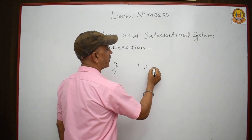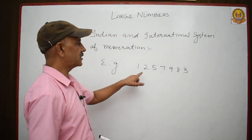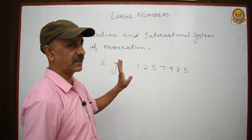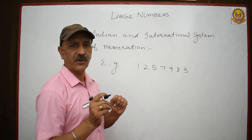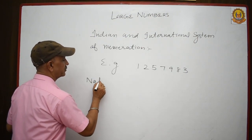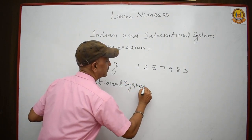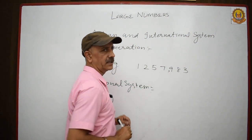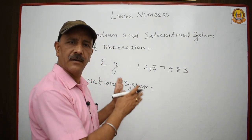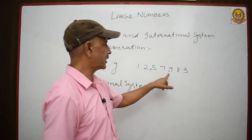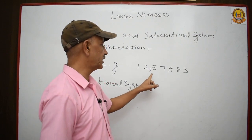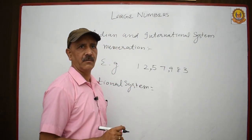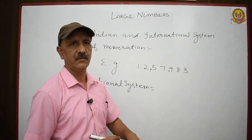Here is a seven-digit number: 1, 2, 5, 7, 9, 8, 3. In the national system, we will put commas — first after three digits, then after two digits, and continuing the same way: after two digits, then two digits, and so on.